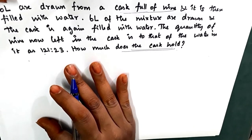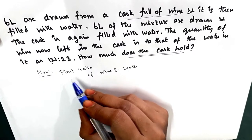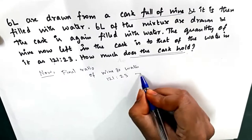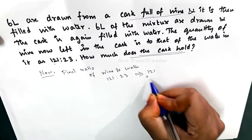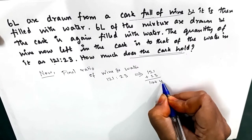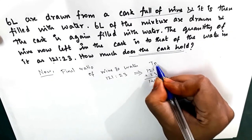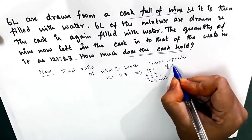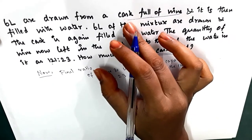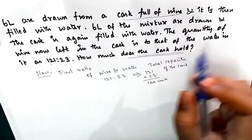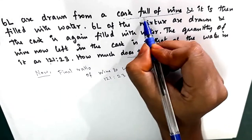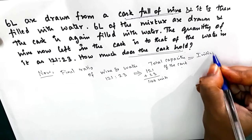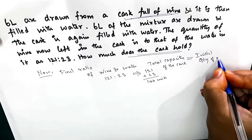We will solve this without using any formula. The final ratio of wine and water is 121 to 23. If we add both we get 144 units, which is the total capacity of the cask. The cask was full of wine, which is the same as the capacity of the cask, so initially the cask was full of wine.